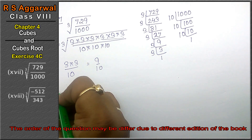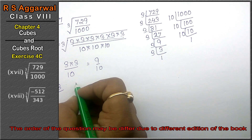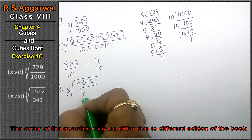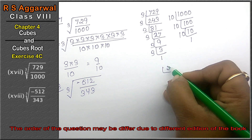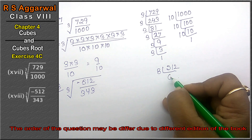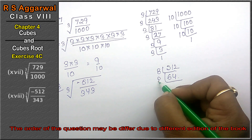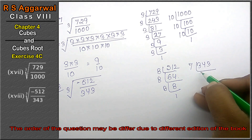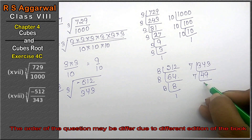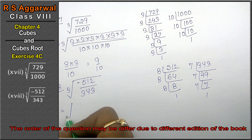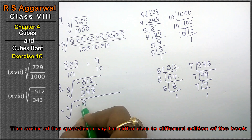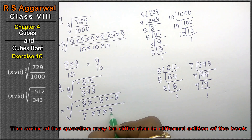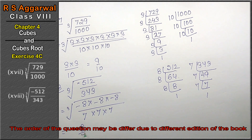Let's do the last question, question number 18 of Exercise 4C, that is Cube and Cube Root. Question number 18 is cube root of minus 512 upon 343. We know 512 = 8³ and 343 = 7×7×7. Writing in cube root: (−8)×(−8)×(−8) upon 7×7×7. Making pairs of 3 and taking one out, minus 8 upon 7 is the answer.